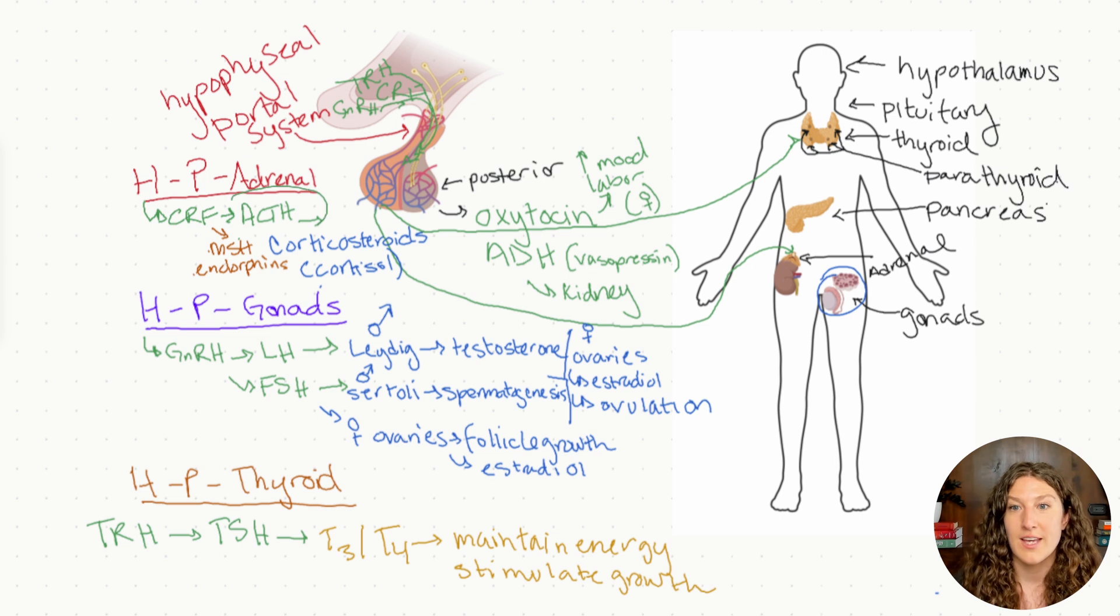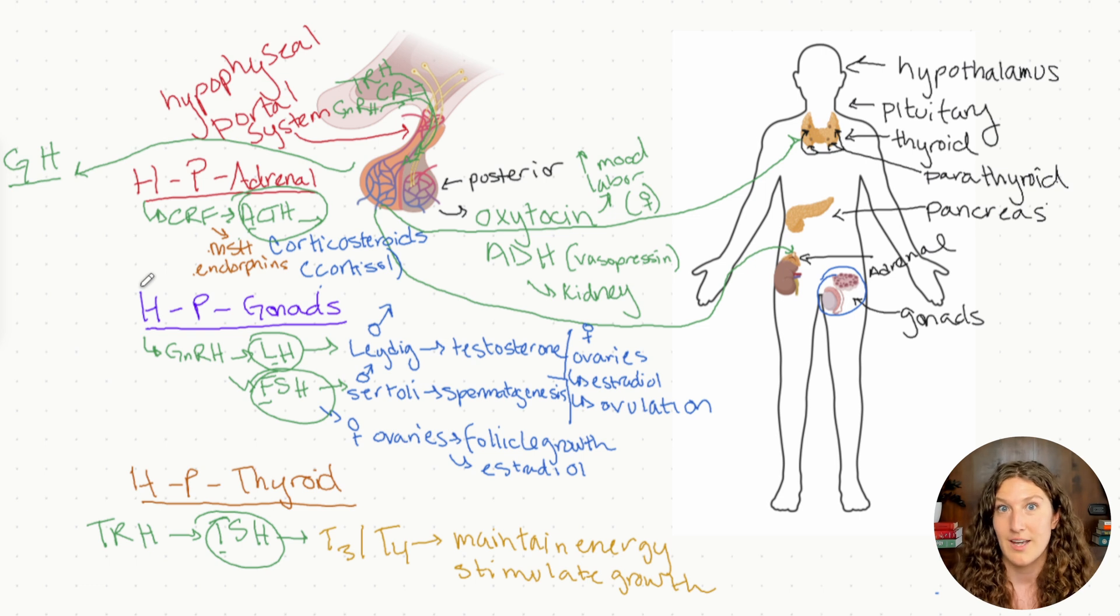Before we wrap up, there are a few more hormones that we have missed in these systems that I want to make sure you have for testing. The anterior pituitary, in addition to producing ACTH, LH, FSH, and TSH, which by the way, there's a fun acronym FLAT, allows you to remember those four hormones that are released by the anterior pituitary. In addition to that, we also have growth hormone, GH, which helps stimulate the linear growth of your body. So it'll help elongate bones, for example. So growth hormone is very important in developing organisms. That's also produced from the anterior pituitary and acts on many, many organs of the body, particularly our musculoskeletal system. The other major hormone that's produced by the anterior pituitary is prolactin, which stimulates breast tissue and promotes milk production in females.